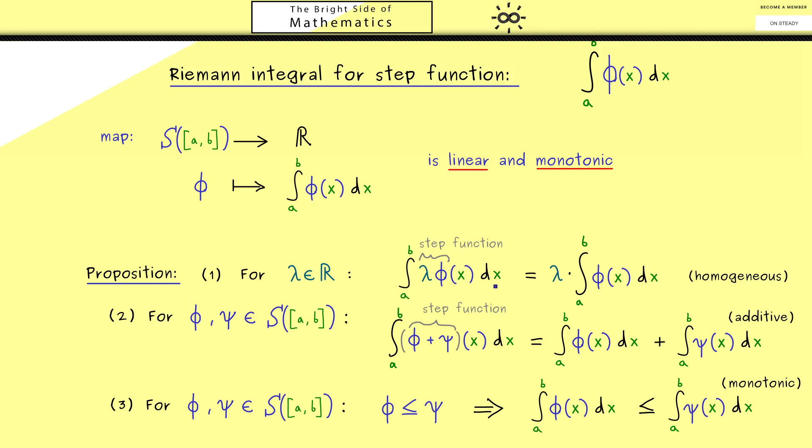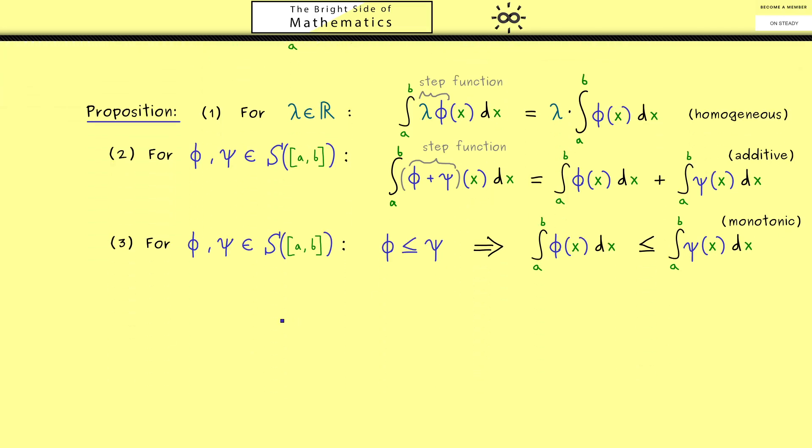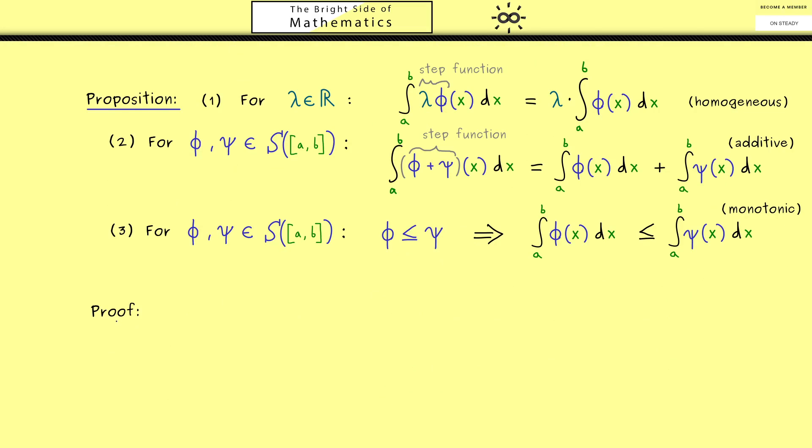Let's talk about the proof of this proposition. It's not hard to prove these statements and the proofs all look similarly. Therefore maybe it's sufficient that I only show you the second part. Let's immediately start by visualizing the two step functions φ and ψ. For example, this could be the graph of the step function φ. As always we are able to choose a partition x₀, x₁ and so on, and numbers c₁, c₂ and so on.